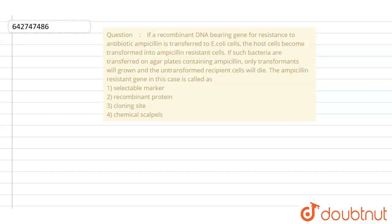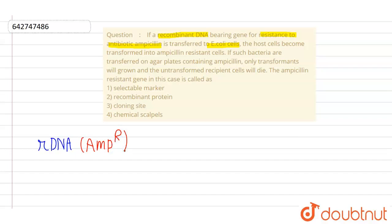I will be converting this into a flow diagram. The first thing it says is that a recombinant DNA — also abbreviated as rDNA — bearing resistance to the antibiotic ampicillin is transferred to E. coli. So this rDNA has a gene for ampicillin resistance, meaning this rDNA is resistant to the ampicillin antibiotic. Now, we are transferring this rDNA into E. coli.